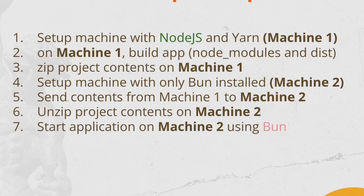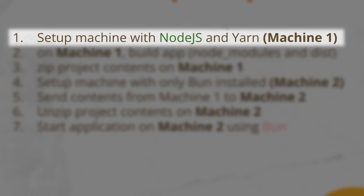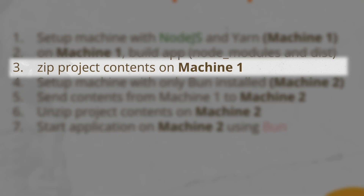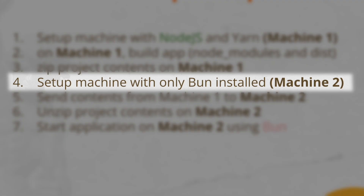This is how the project is going to work. First, we're going to set up the first machine on EC2 — we'll call it Machine1. On Machine1, we're going to install Node.js and Yarn, clone the Git repository containing the NestJS codebase, build the project to generate the node_modules folder and the dist folder, and then zip the entire project contents. After that, we're going to set up a second machine on EC2 which only contains Bun installed — no Node, no Yarn, only Bun.